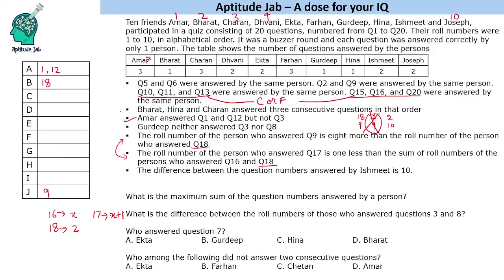The next statement says Bharat, Hina, and Charan answered 3 consecutive questions in that order. We know Bharat answered question 18, so Hina answered question 19 and Charan answered question 20. Since questions 15, 16, and 20 were answered by the same person, and Charan answered 20, Charan's group is {15, 16, 20}. That means Farhan's group is {10, 11, 13}.